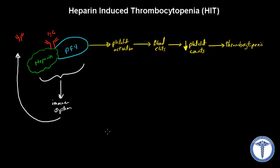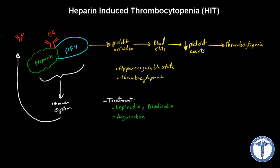So if we have a patient who suffers from HIT, he or she will be in a hypercoagulable state and at the same time will have thrombocytopenia. How do we treat a patient who is suffering from HIT? Well, we can take them off heparin and put them on either lepirudin or bivalirudin, which are alternatives to heparin, or we can give them argatroban. Either way, they all have the same mechanism of action, and that is to directly inhibit thrombin.